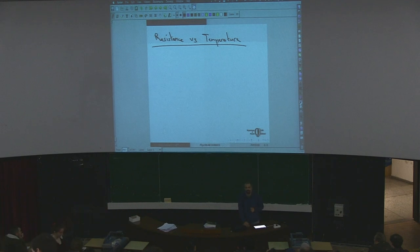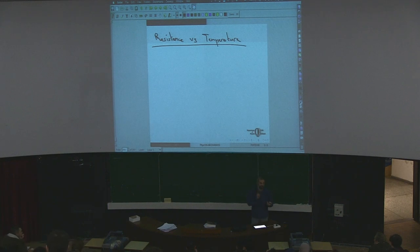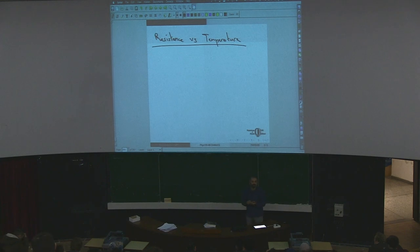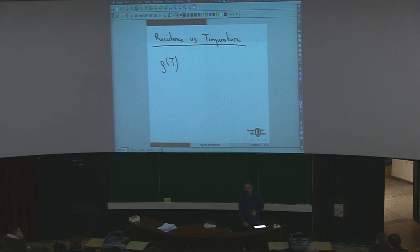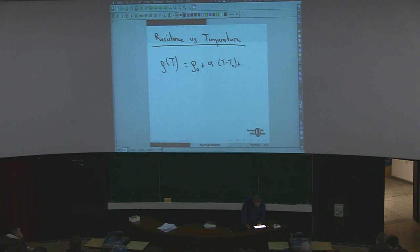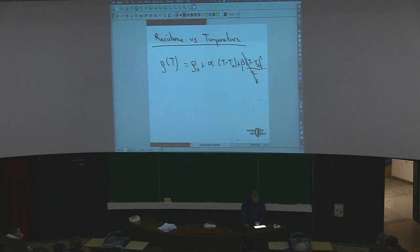When resistance increases, current drops — specifically the drift velocity decreases. Since resistivity is a function of temperature, we can make a Taylor expansion: ρ(T) = ρ₀ + α(T − T₀) + β(T − T₀)²/2 + ... Usually we ignore higher-order terms since they are small, and approximate the temperature dependence with just the linear term.